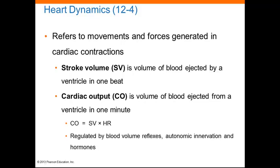Heart dynamics refers to the movement and forces generated during cardiac cycle contractions. The amount of blood ejected by a ventricle during a single beat is the stroke volume, but since this can vary beat to beat, cardiac output is a more valuable number. Cardiac output is the amount of blood pumped by the left ventricle in one minute and provides an indication of blood flow through peripheral tissues. It is calculated by multiplying the heart rate by the average stroke volume.